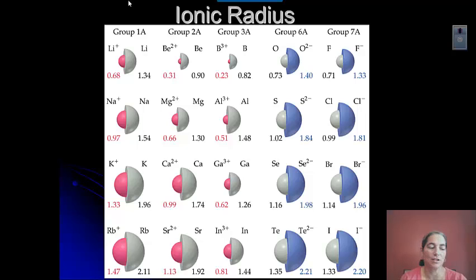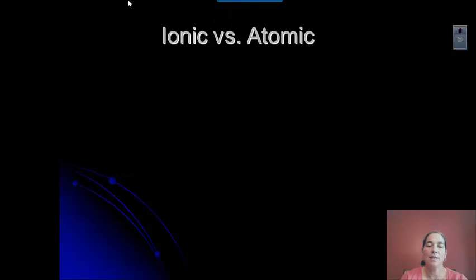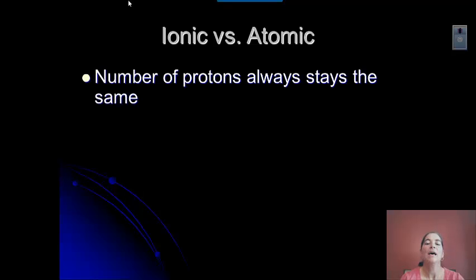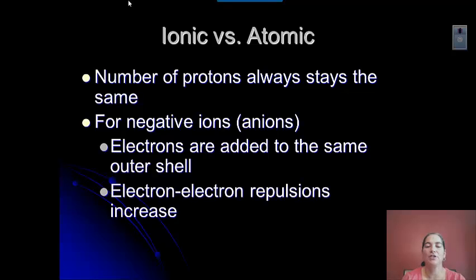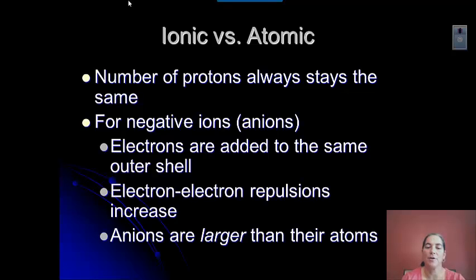So that's the first relationship we have to think about, the relationship between the atom and its ion. When we compare the ionic radius versus the atomic radius, the number of protons is the same. It's an ion or an atom of the same element. And so for negative ions, the electrons are added to that same outer shell, but it increases those electron-electron repulsions. So anions are always going to be larger than their atoms because those electrons are spreading out more.